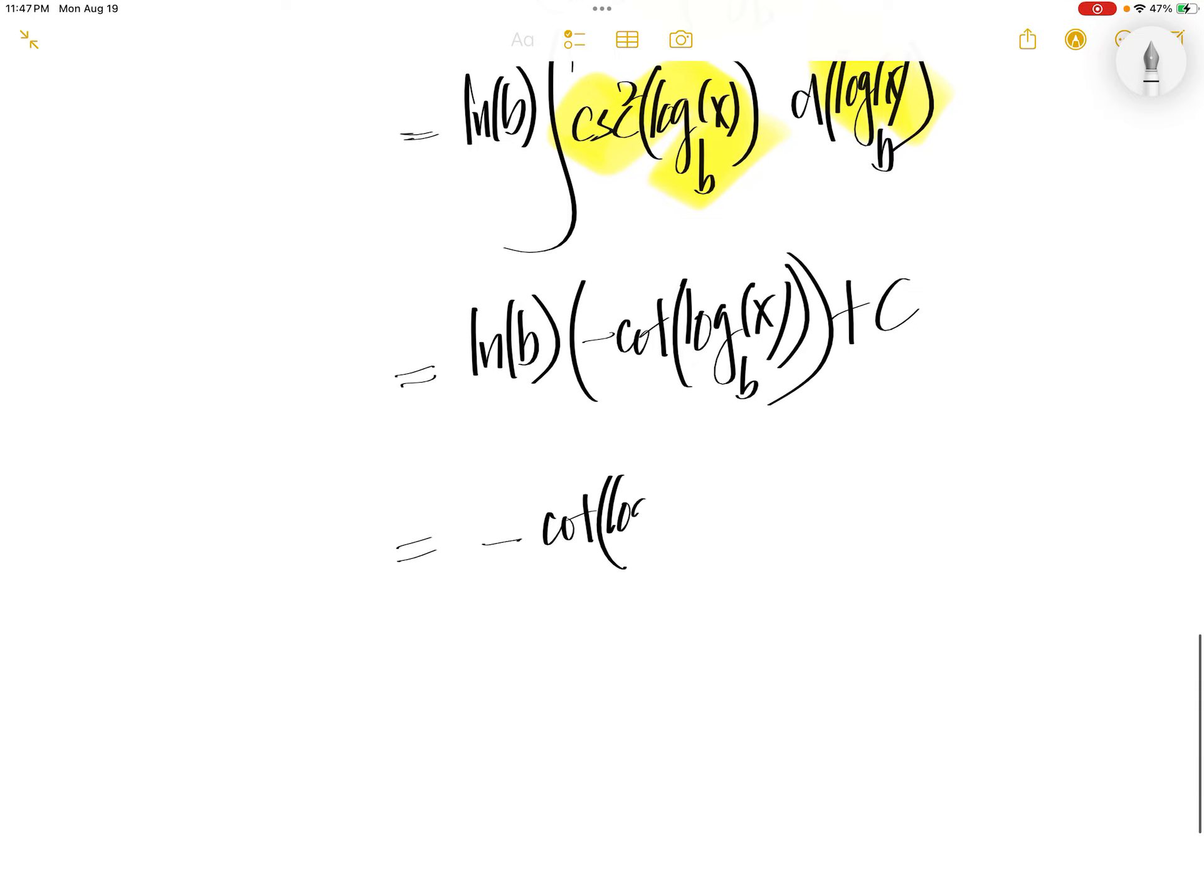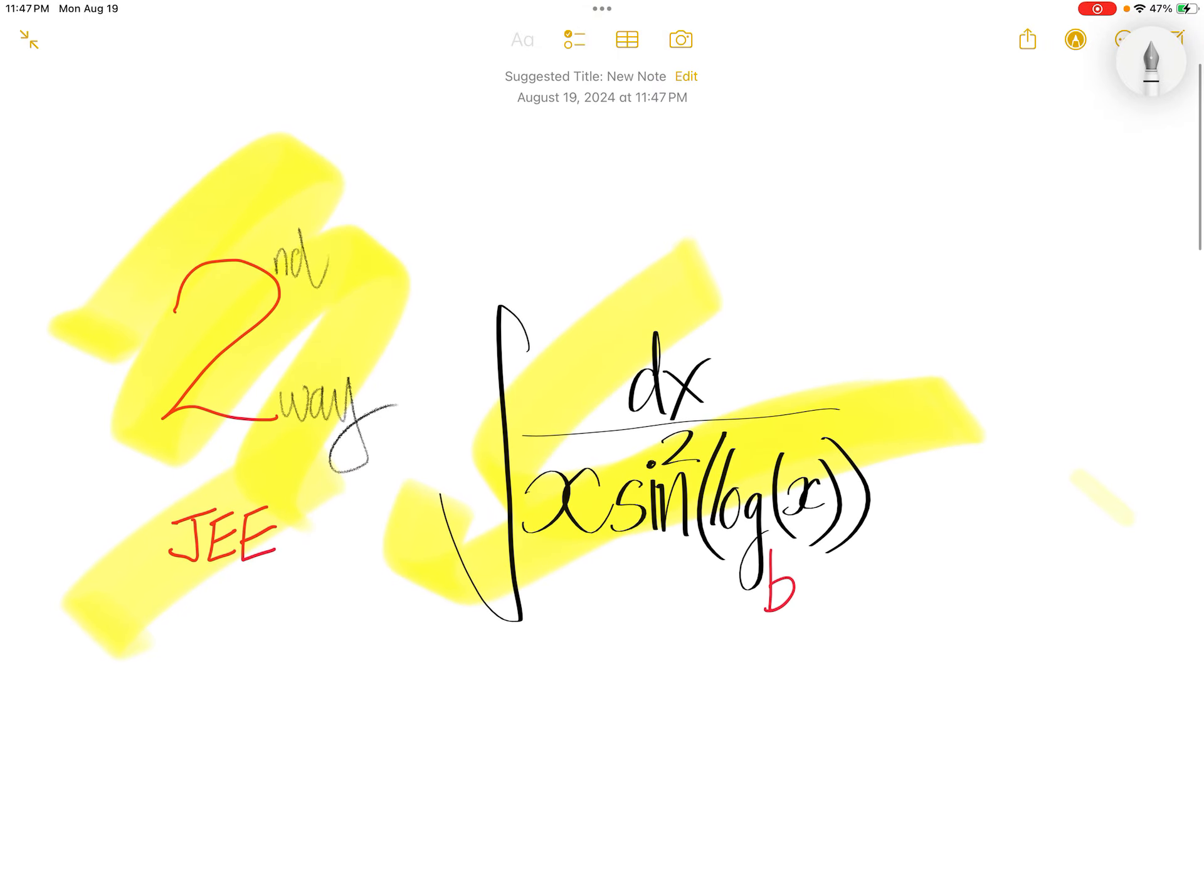Therefore, it is minus cot of log x to the base b plus c. It is ln b times negative cot of log x to the base b.